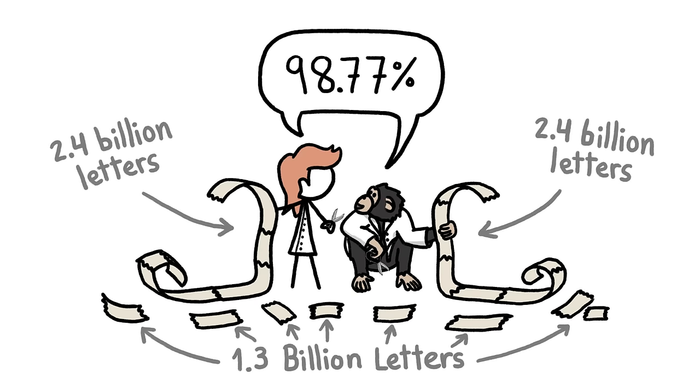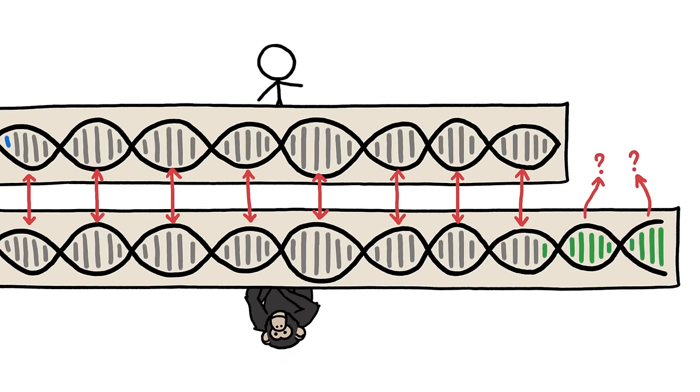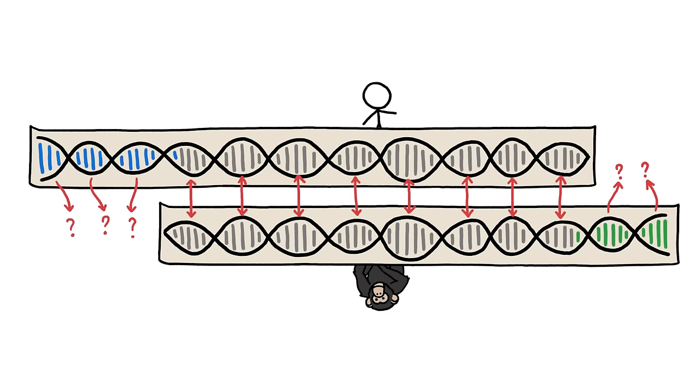which turned out to be 98.77% identical. So, yes, we share 99% of our DNA with chimps if we ignore 18% of their genome and 25% of ours.